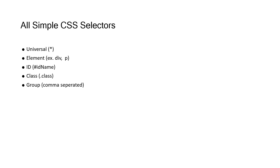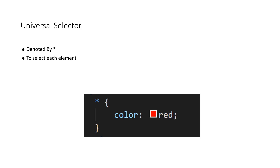Let's check what CSS selectors we have. First we have the universal selector, which is denoted by star. Then we have element selectors, then the ID selector which is denoted by hash, then the class selector which is denoted by dot, and an additional selector we'll be covering in this video is the group selector. Without wasting any time, let's start.